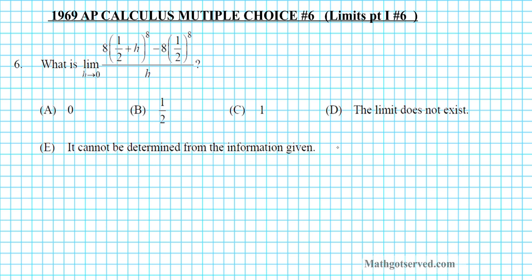So for number 6 it is: what is the limit as h approaches 0 of 8 times the quantity 1 half plus h to the 8th power minus 8 times 1 half to the 8th over h. Now this is a derivative problem written in limit form. So whenever you see a problem like this you want to convert it into a derivative problem and evaluate the derivative at the specified point.